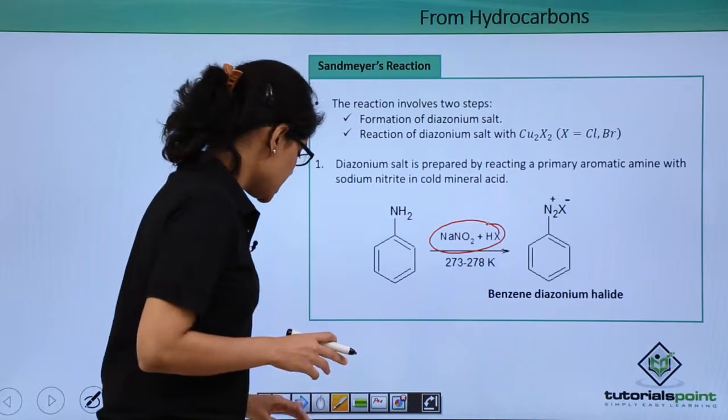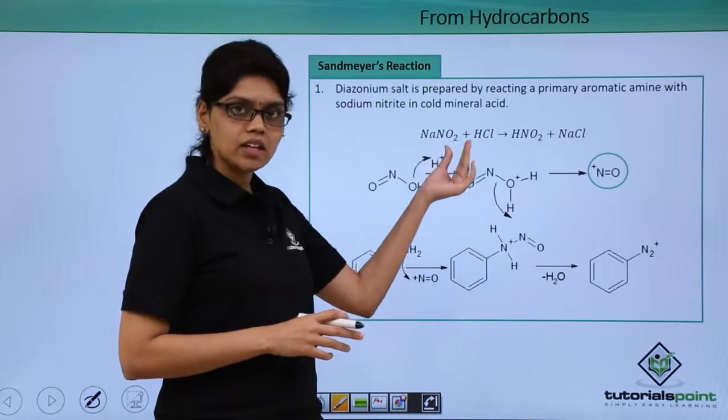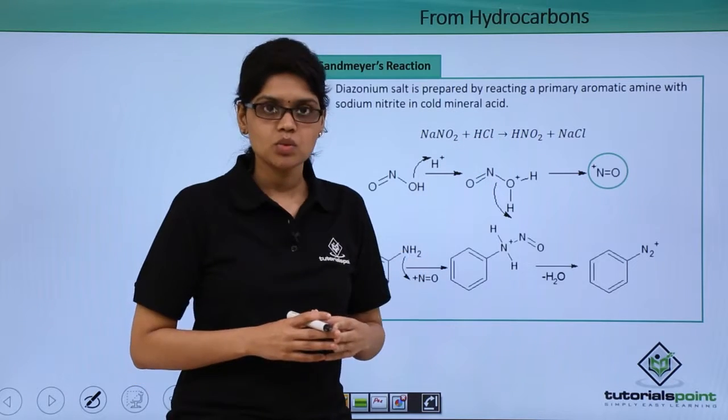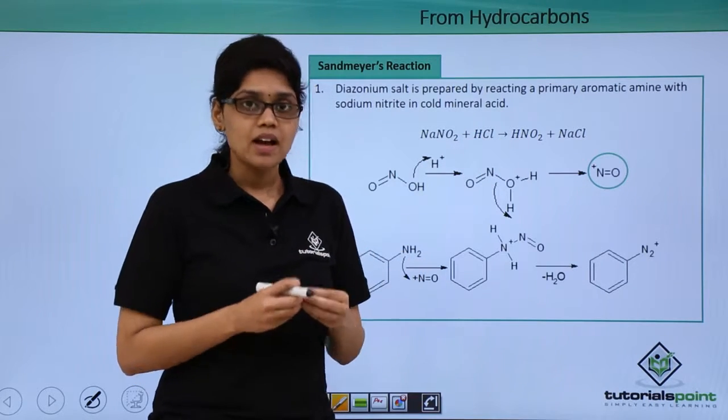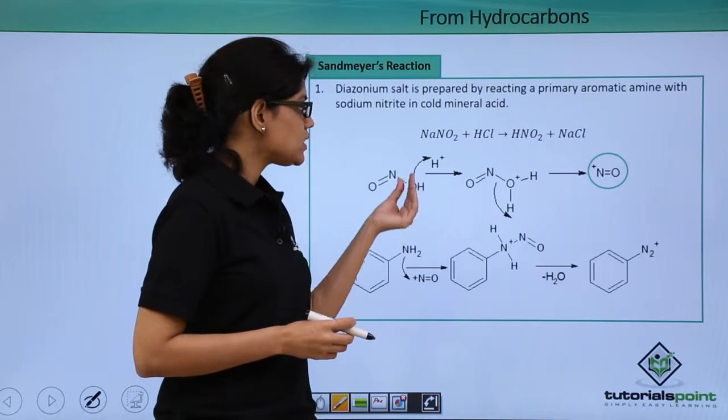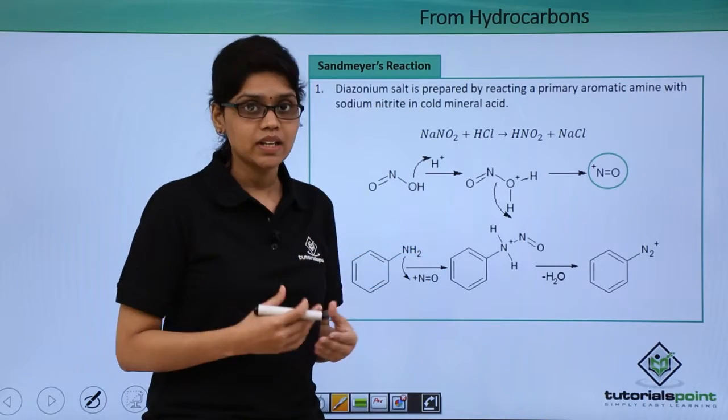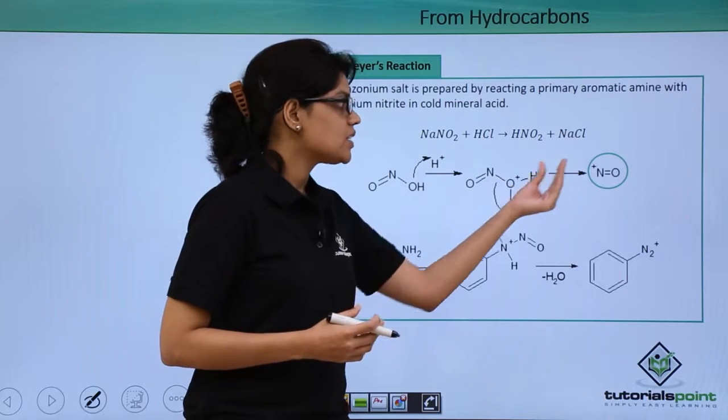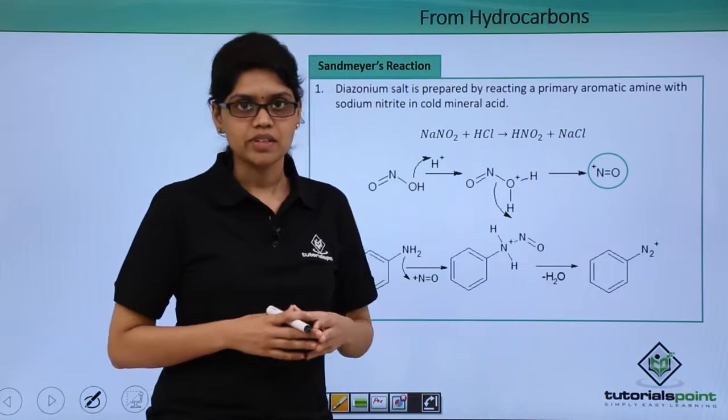Let us look at the mechanism here. Essentially, we are reacting NaNO2 with HCl to give us HNO2 which is the reactive species. HNO2 in the presence of H+, the oxygen atom in hydroxyl groups gets protonated such that it leaves and gives us NO+ as the electrophile.